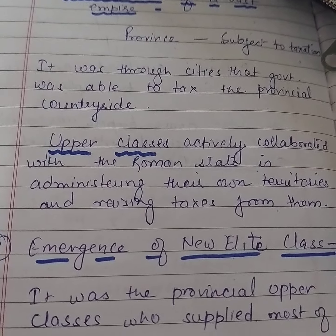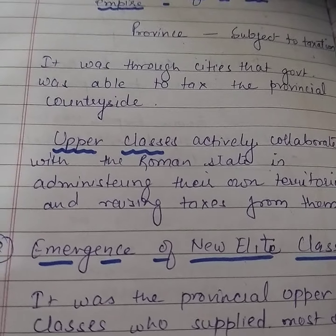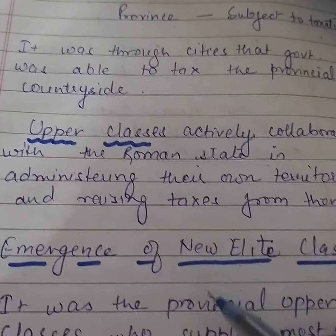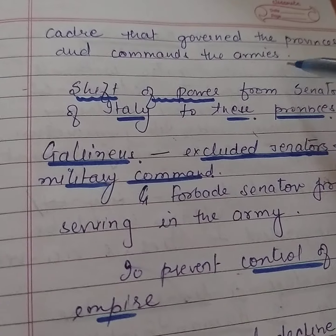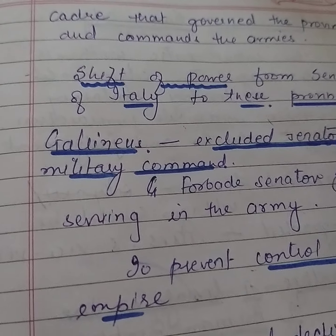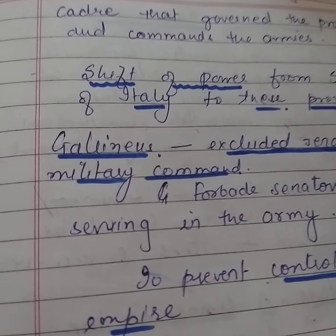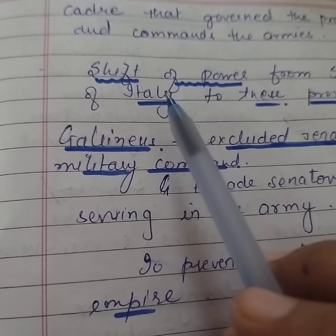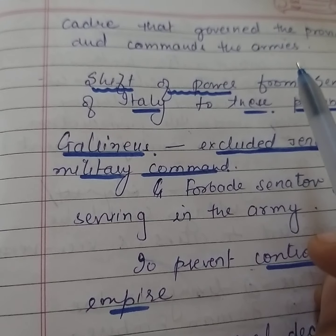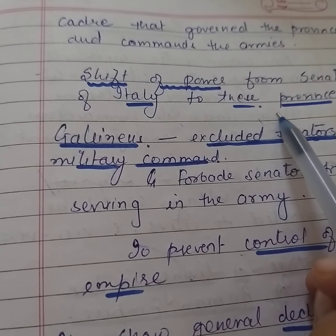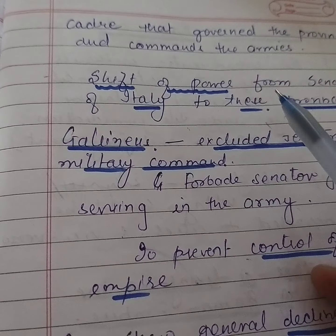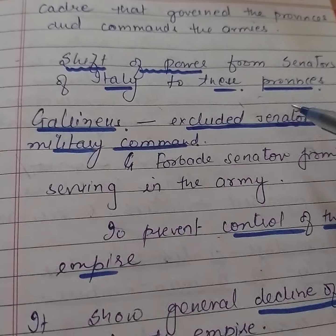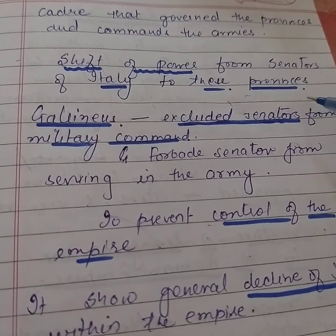Throughout the 2nd and 3rd centuries, new administrators and officials were recruited from these upper classes — most of the cadres who governed the cities and commanded the armies. One of the most interesting aspects of Roman political history is that power now shifted from the senators to the elite group of these provinces, becoming more powerful than the senatorial class.